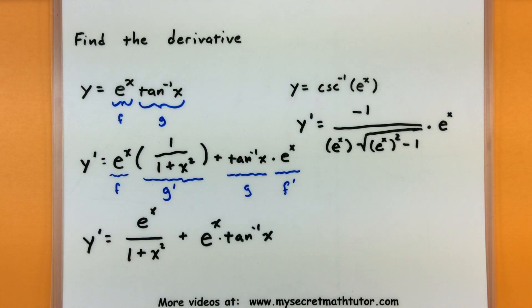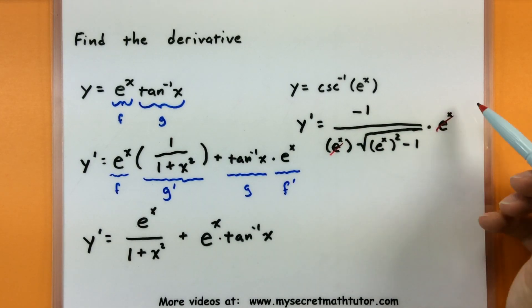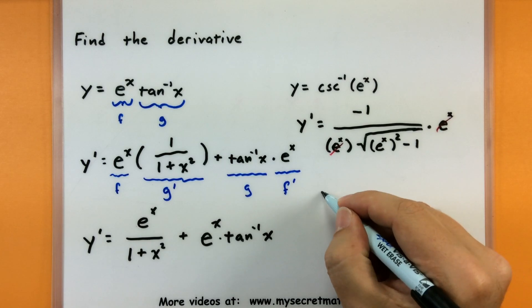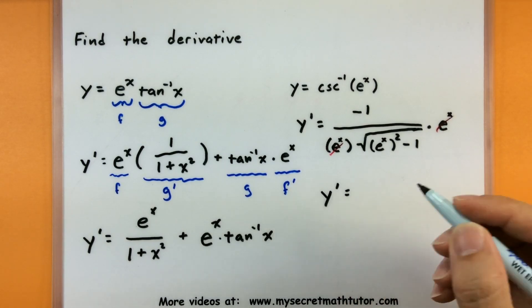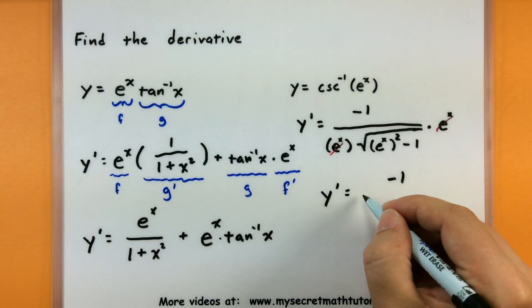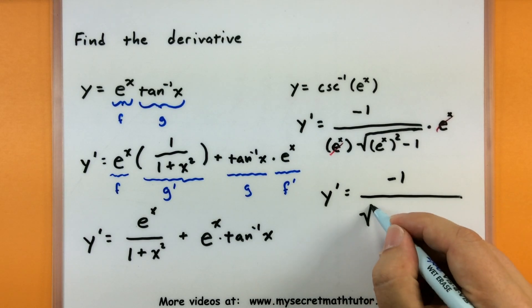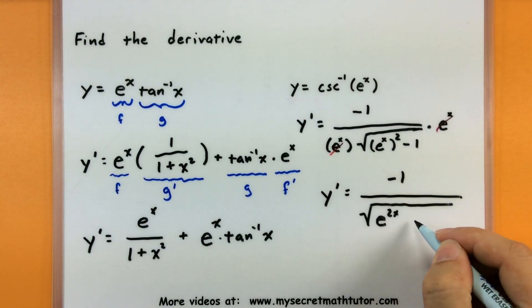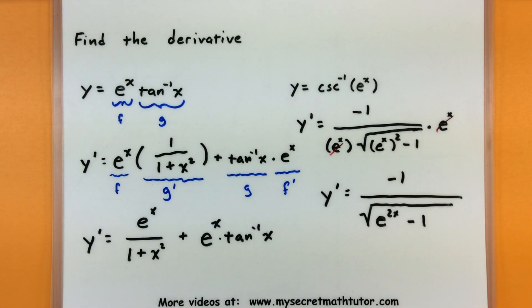All right, now there's definitely some good cleaning up we can do here. In fact, we have a common e to the x in the bottom and in the top, so we'll go ahead and get rid of those. So we'll say the derivative here is a negative one, all divided by the square root of e to the 2x minus one, and now we're done with that derivative.